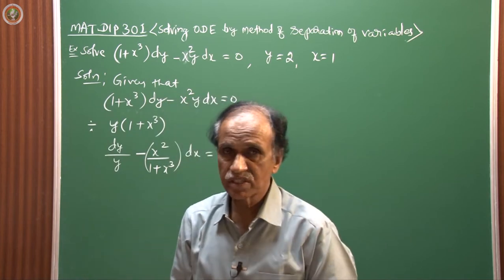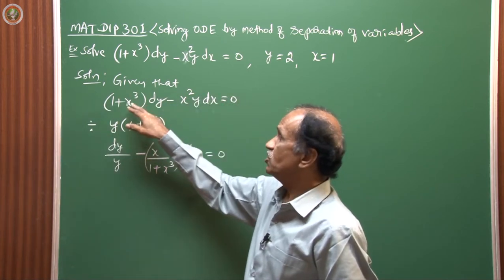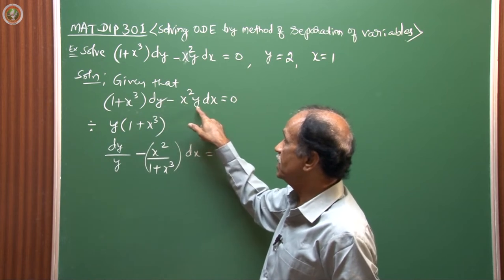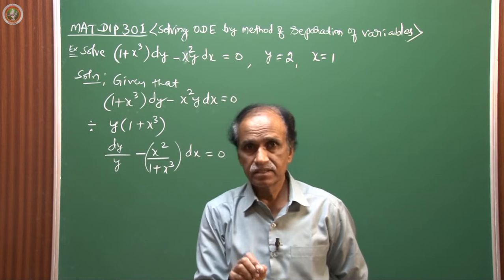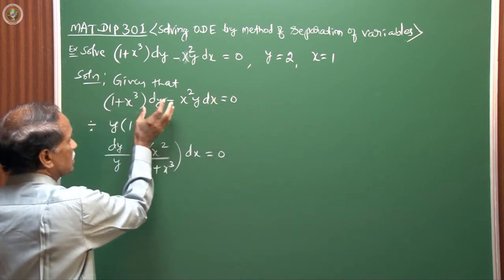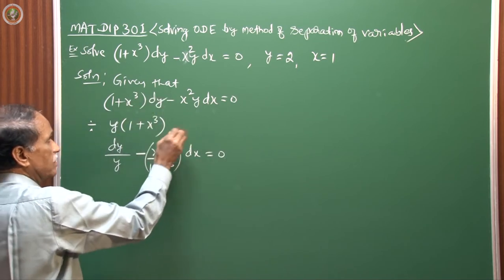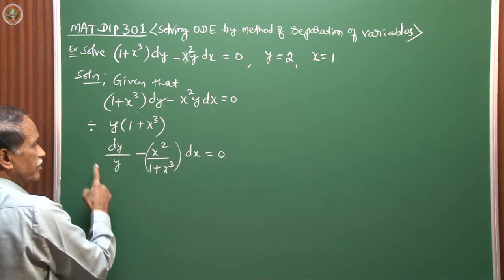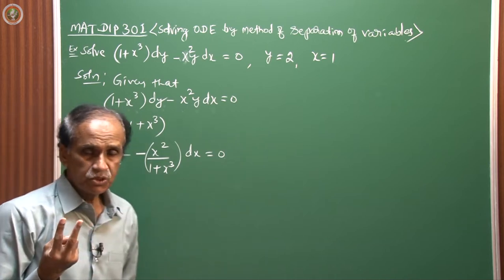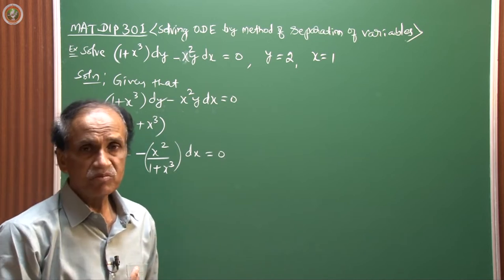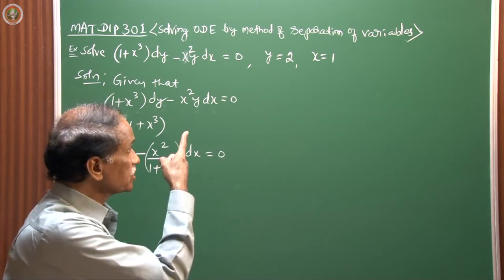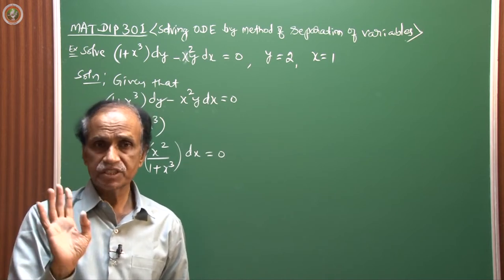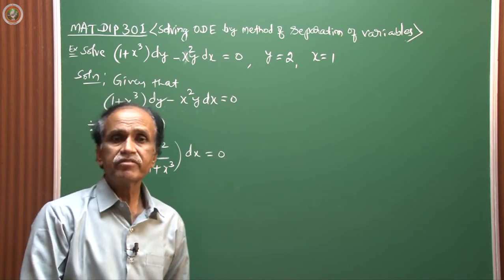There are two main steps: rearrangement according to separation of variables, and then integration. When an initial condition is given, there is a third step — finding the particular constant. Now we write the solution by integrating each term: ∫dy/y − ∫x²/(1 + x³)dx = constant. The first integral is log y. For the second, since the derivative of x³ is 3x², the result is (1/3)log(1 + x³), giving: log y − (1/3)log(1 + x³) = c.